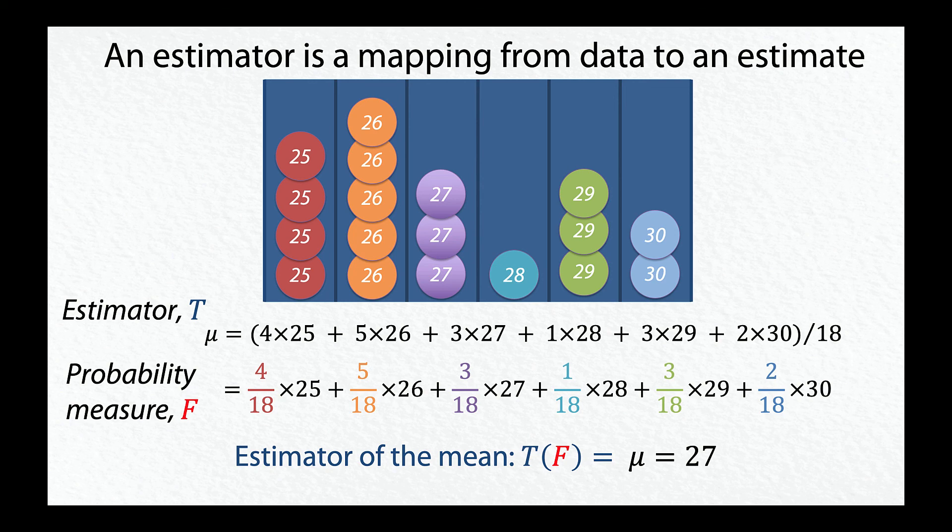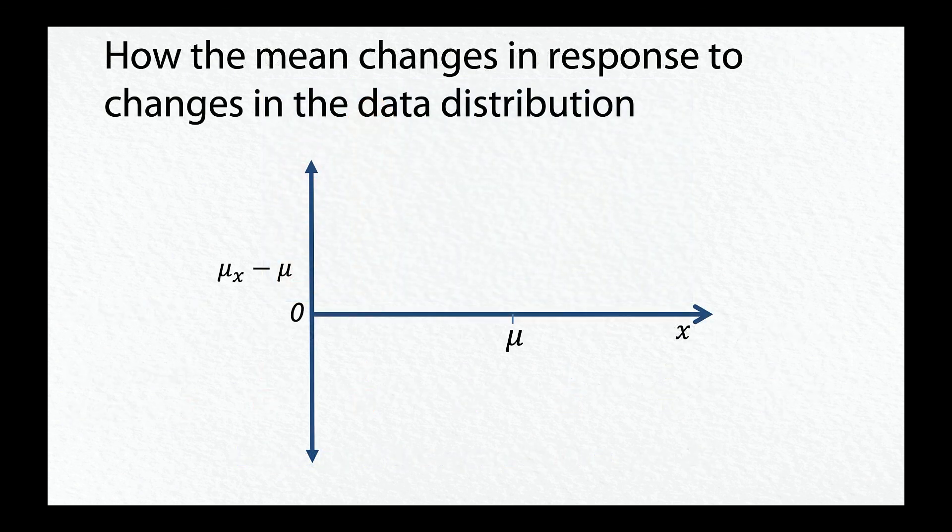We can plot how the mean changes in response to changes in the data distribution. The x-axis is the real number line. The y-axis shows how the mean changes in response to the addition of a point mass at x. As shown, adding a point mass whose value is mu has no effect on the mean. Adding a point mass to the right increases the mean, and if we add it at a more extreme value, it produces an even more dramatic increase. So these points show us how our estimator of the mean behaves in response to small changes in the data distribution.